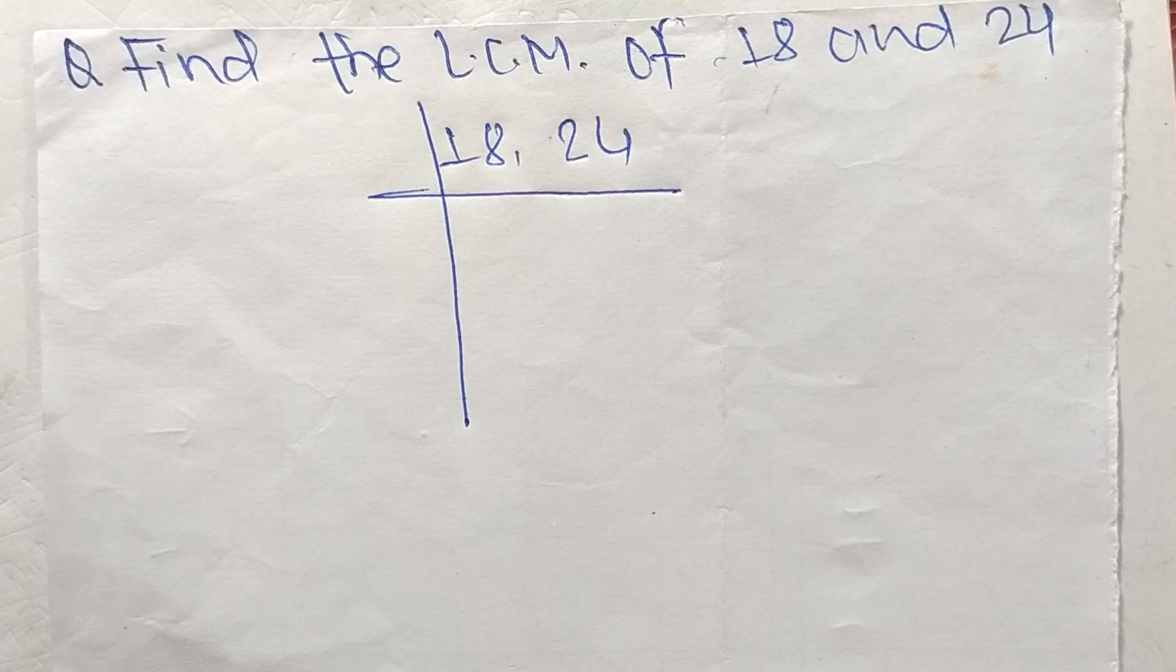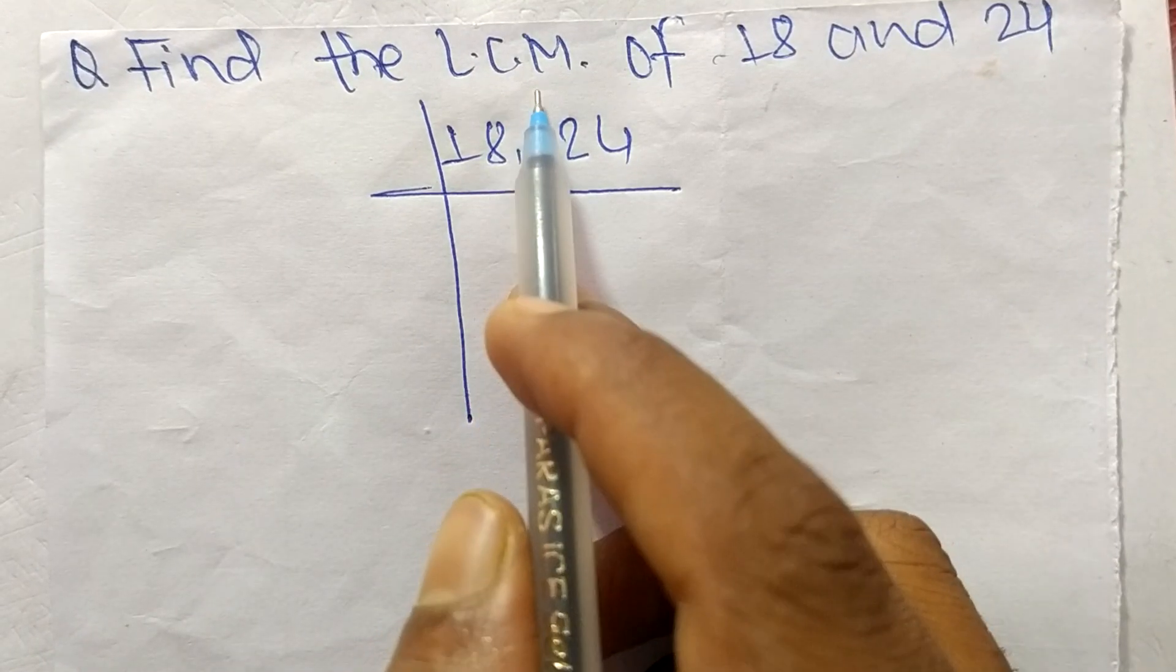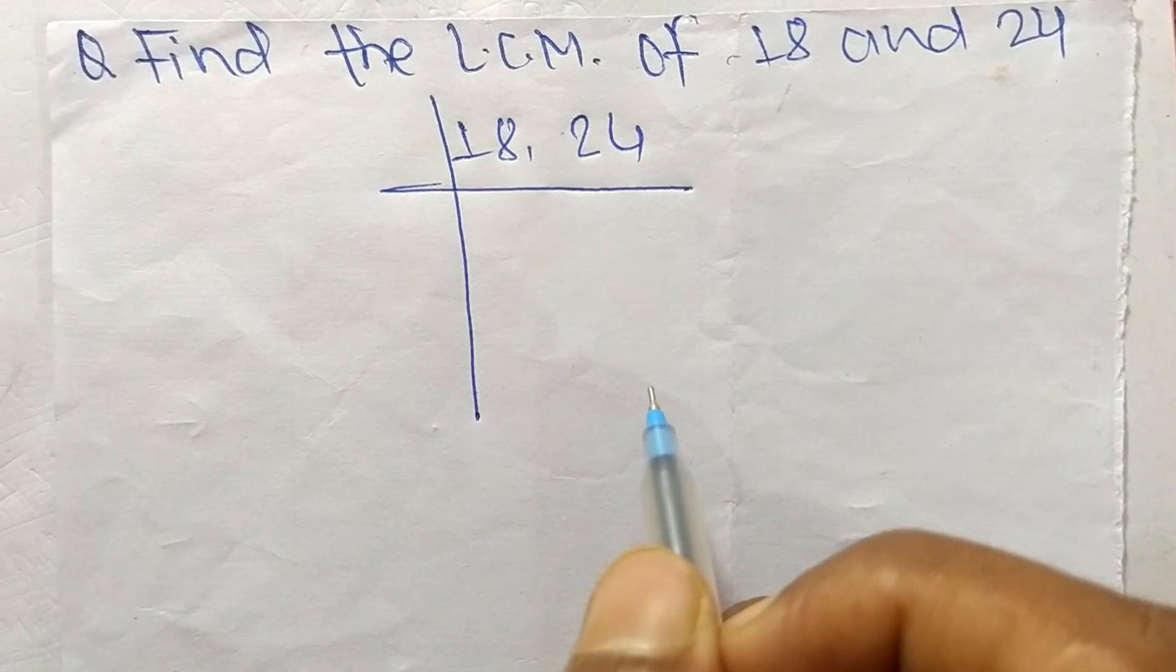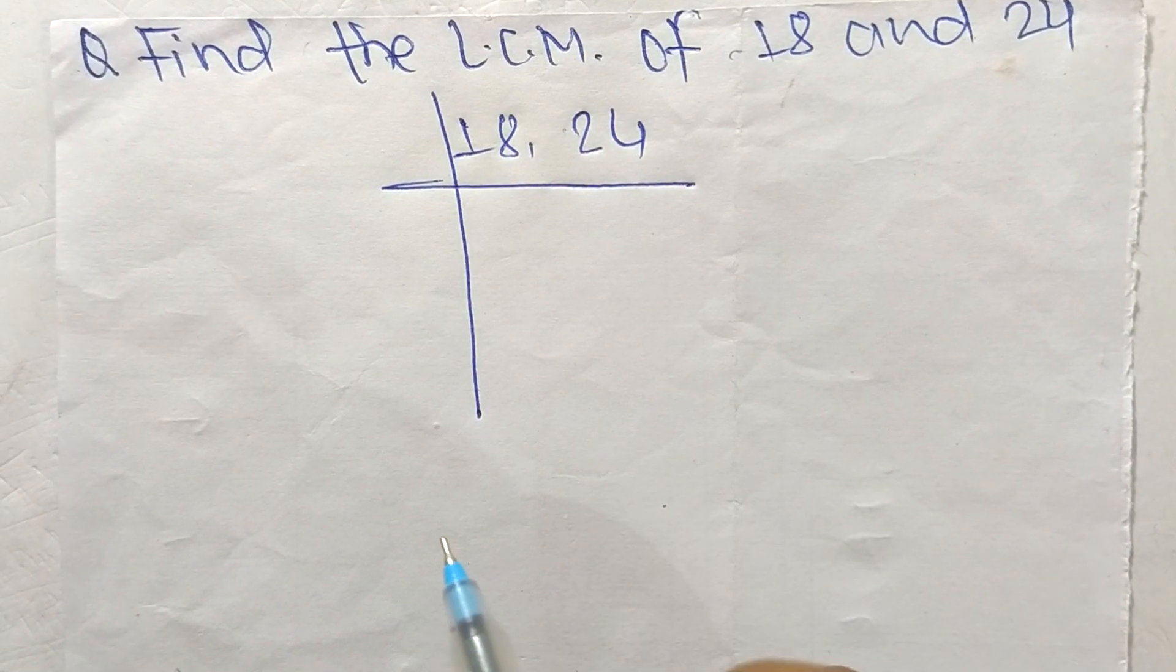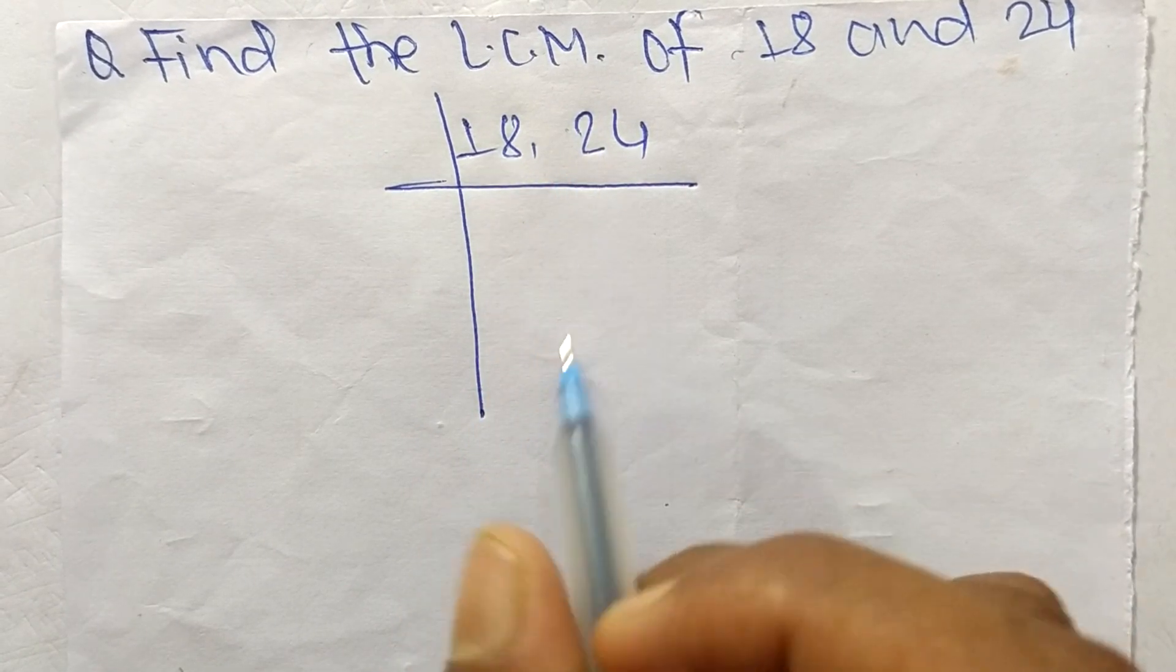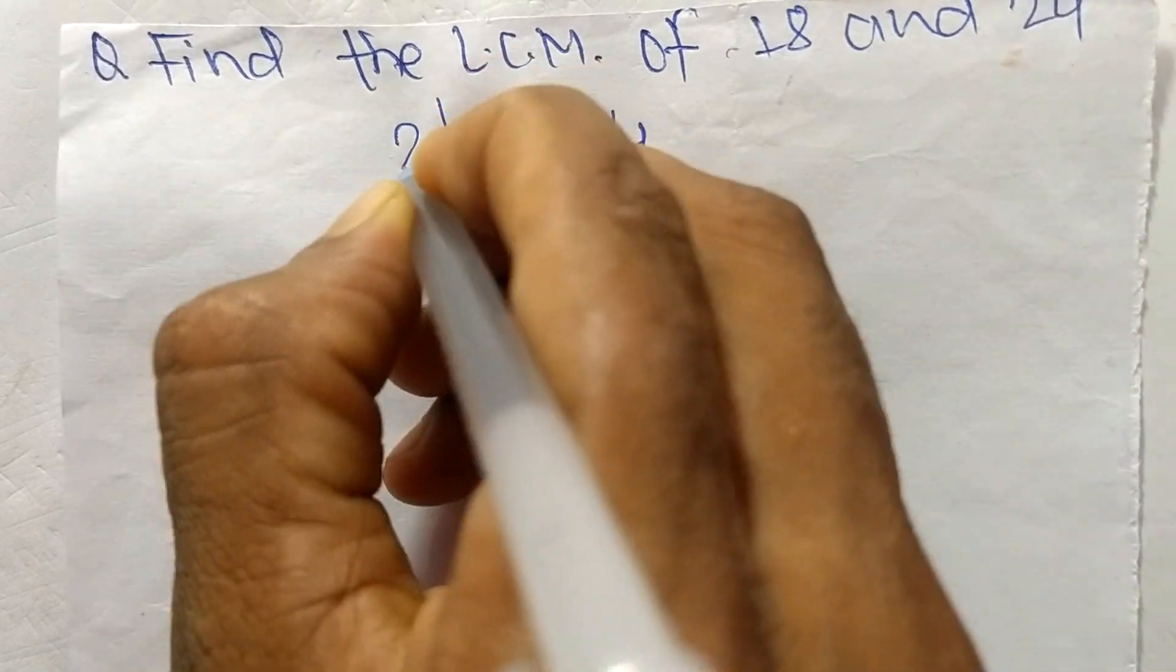So today in this video we shall learn to find the LCM of 18 and 24. To find LCM, first we have to choose the lowest number that can exactly divide 18 and 24, so the number is 2.